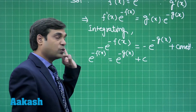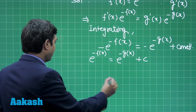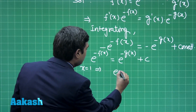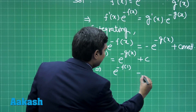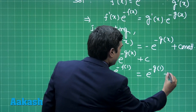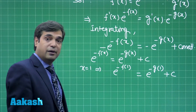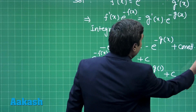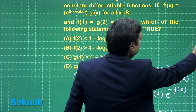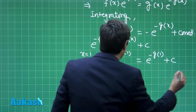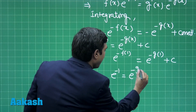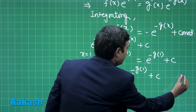Now substituting x equals 1, we get e to the power minus f(1) is equal to e to the power minus g(1) plus constant. It is given that f(1) and g(2) are both equal to 1. So we can write e to the power minus 1 is equal to e to the power minus g(1) plus constant. Let us call this equation 1.